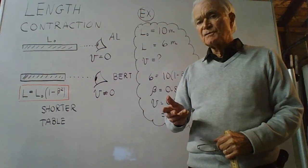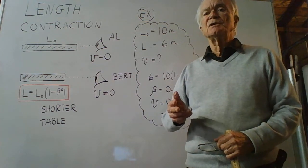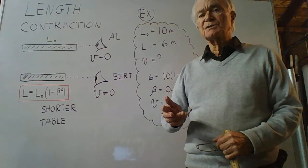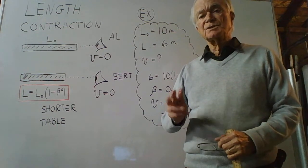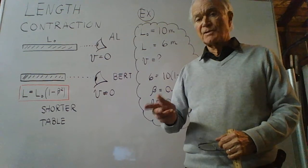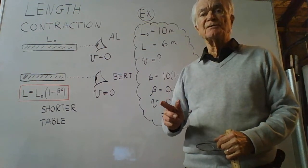Different observers moving at different relative speeds relative to an object see different lengths. They're all correct about the length of the object.